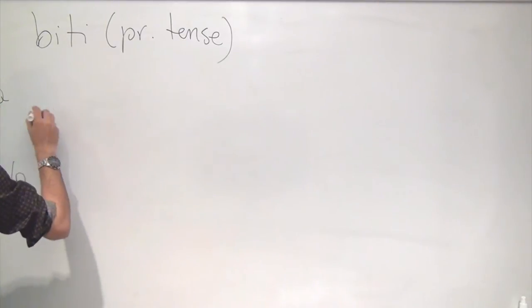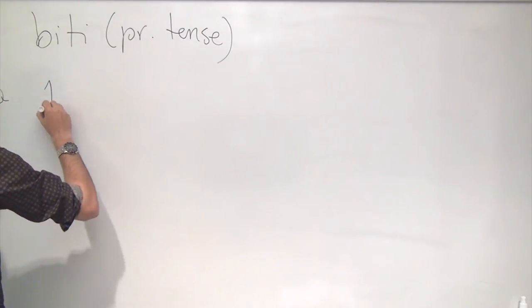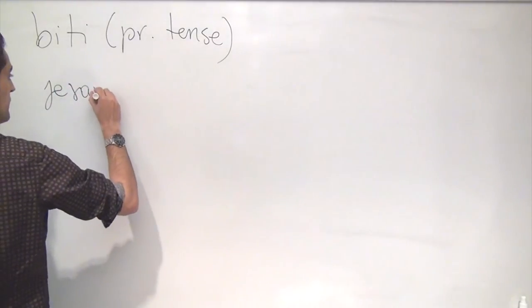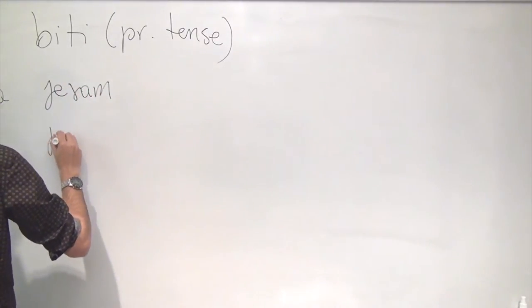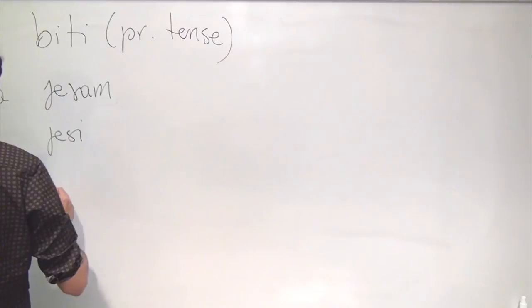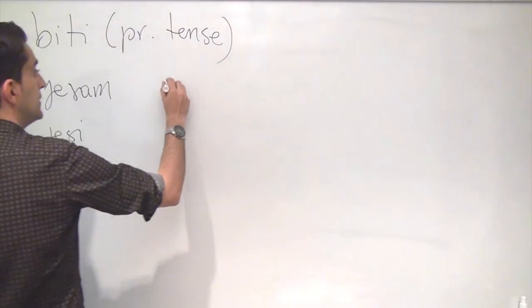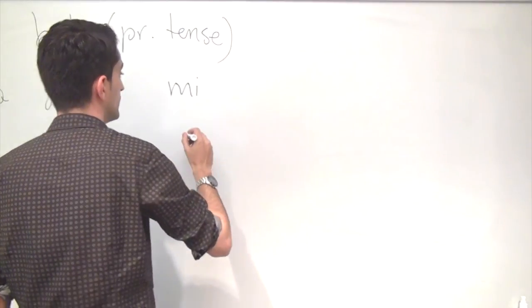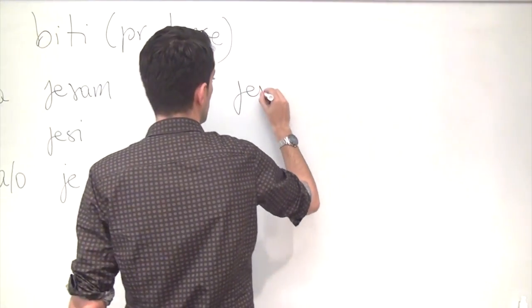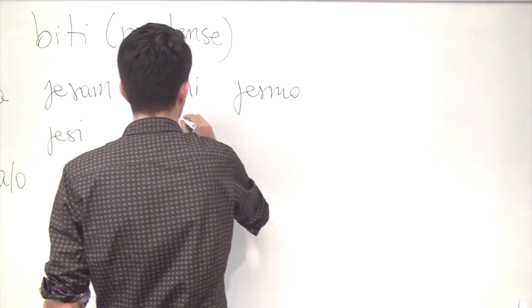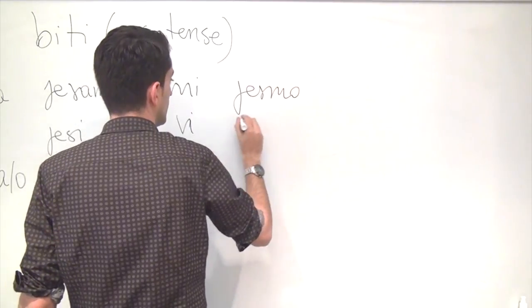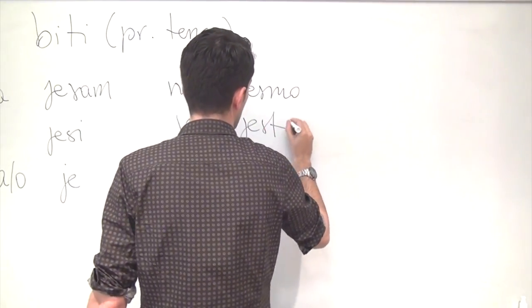Ja, first person singular, jesam. Ti, jesi. On, ona, ono, je. Mi, jesmo. Vi, jeste. Oni, jesu.